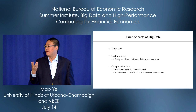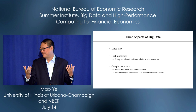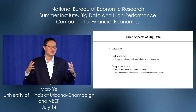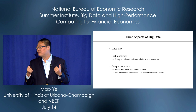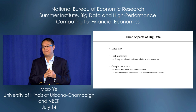The first dimension is large size — that's a minimum. But size alone is not enough. Big data also has high dimension, meaning you have lots and lots of variables. Sometimes the number of variables can even be bigger than the number of observations — this is called a high dimensional problem. The third dimension is complex structure.